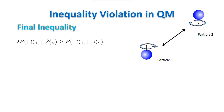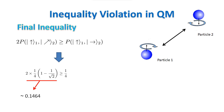We are now ready to plug the values we have found into the inequality. We find that for a system of entangled particles in a singlet state, the inequality is violated. If our pairs of particles were classical objects, the inequality would not have been violated. But they are not. If this result can be proved experimentally, it means that there is no classical mechanism that can reproduce the results of quantum mechanics. The theory of hidden variables can be ruled out.